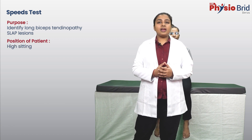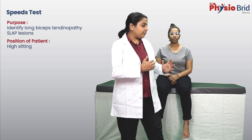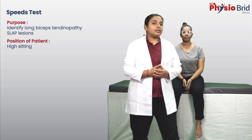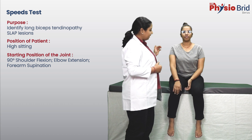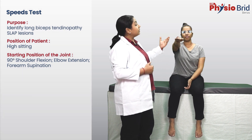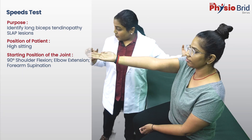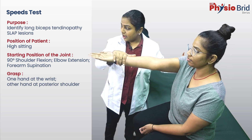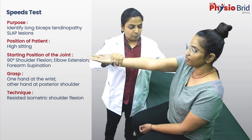To perform the test, we can have the patient in sitting or standing position. Here we have Shweta, who is in the sitting position. The shoulder is flexed to 90 degrees with the elbow extended and forearm completely supinated. With one hand, apply a downward pressure on the wrist and instruct the patient to resist any movement.